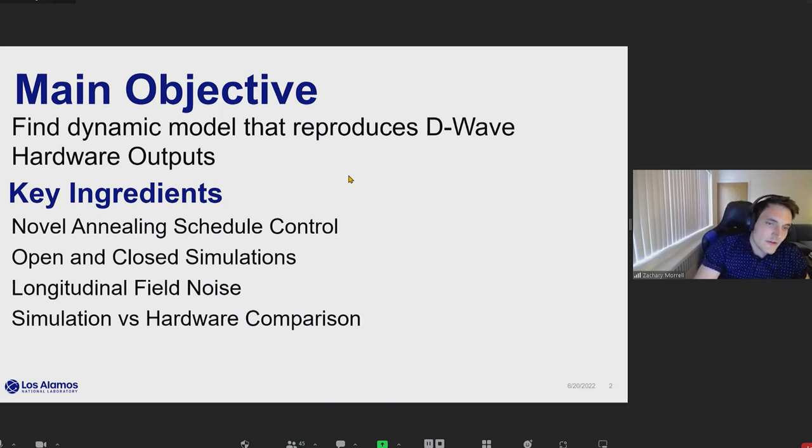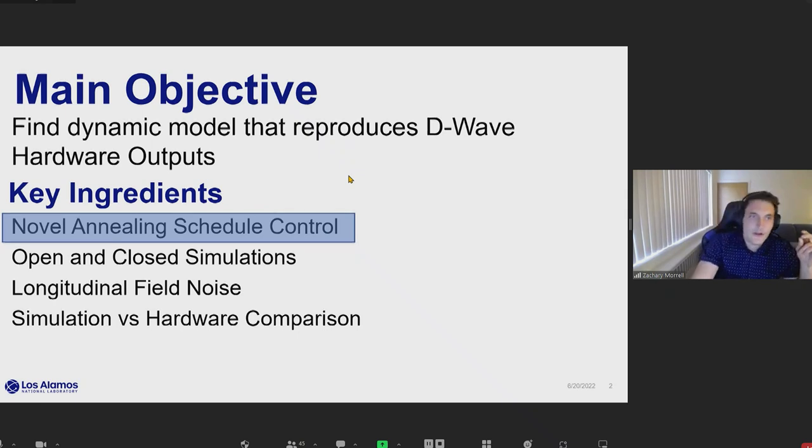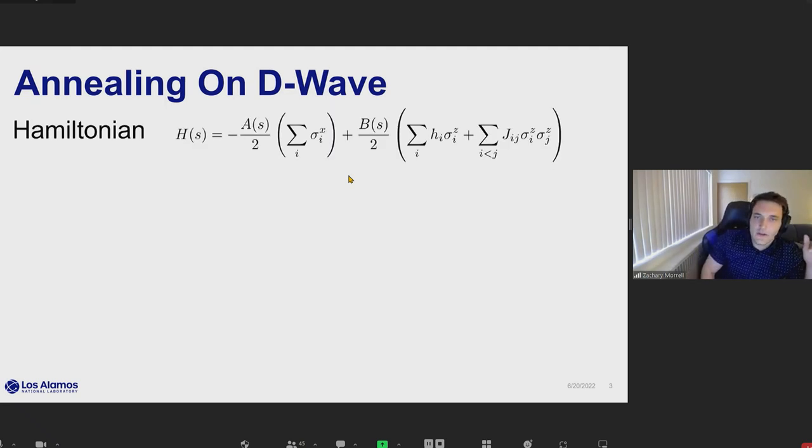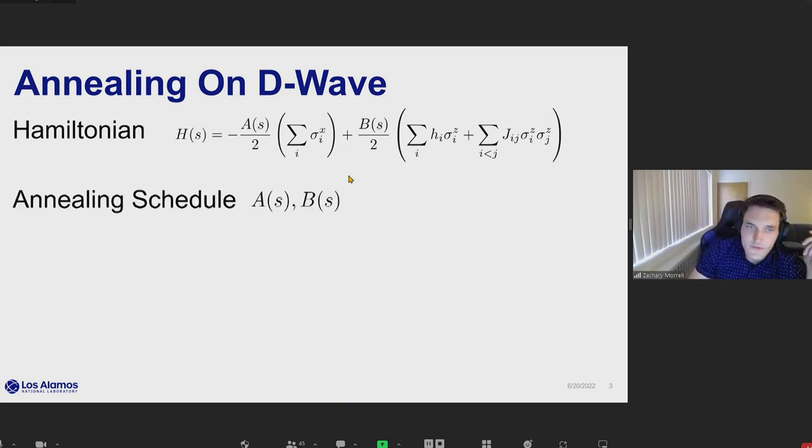I'll start with the novel annealing schedule. Let me give an introduction on how annealing on D-Wave works. You have your Hamiltonian, shown here, where you have your initial transverse field given by these sigma-x terms. And then you have your final or target Hamiltonian on the right side given by these sigma-z terms.